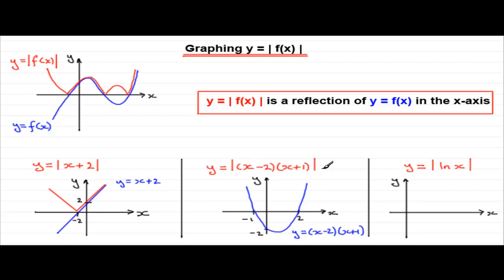For the mod graph of (x-2)(x+1): the sections where y is positive stay exactly the same, so we come down there. The section between x equals −1 and x equals 2 — where y is negative — gets reflected in the x-axis, giving an upward arch. The rest of the curve remains the same. The y-axis intercept, which was at −2, is now reflected up to +2.